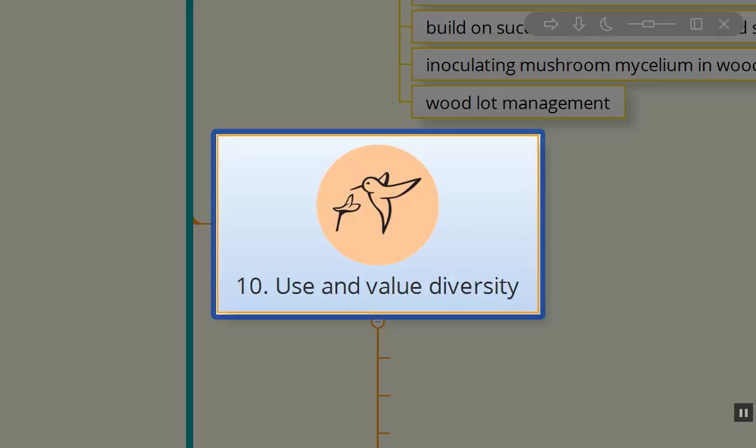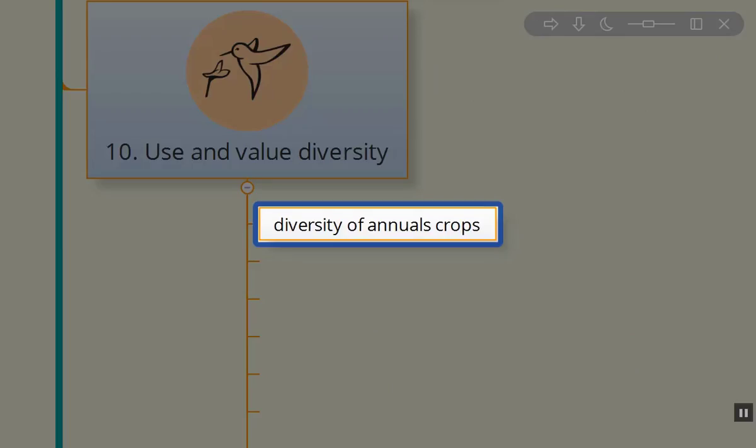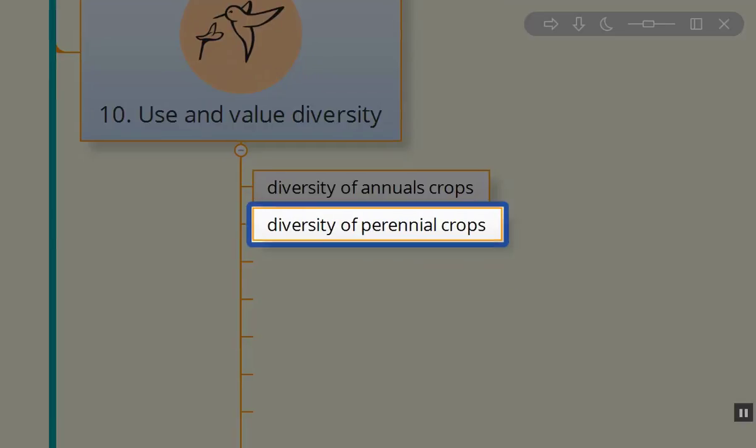So use and value diversity, the 10th permaculture principle. Very, very important. Diverse annual crops. So let's say you love your Irish potatoes. Well, maybe you might want to also plant some sweet potatoes and maybe do some anthocyanin producing blue type of the standard white potatoes, your Irish potato type. Maybe you're going to include some Jerusalem artichokes so that they're there as your starch crop.